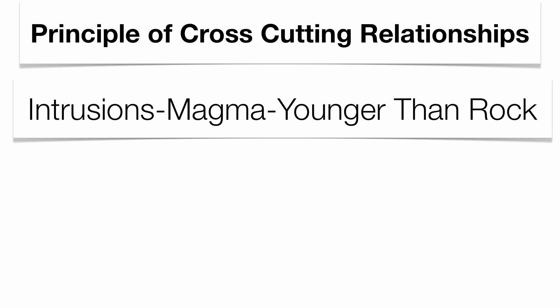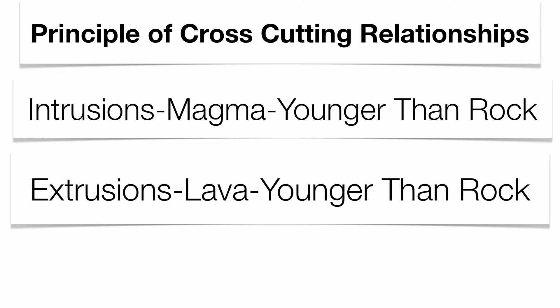The principle of cross-cutting relationships deals with intrusions — magma, which is igneous material deep inside the Earth — that is always going to be younger than the rock around it. You also have extrusions, which are lava flows, and they're also younger than the rock around them. Any type of deformation or alteration to the rock means the rock is always older than the processes that touch it, whether it's intrusions, extrusions, folding, faulting, or tilting.